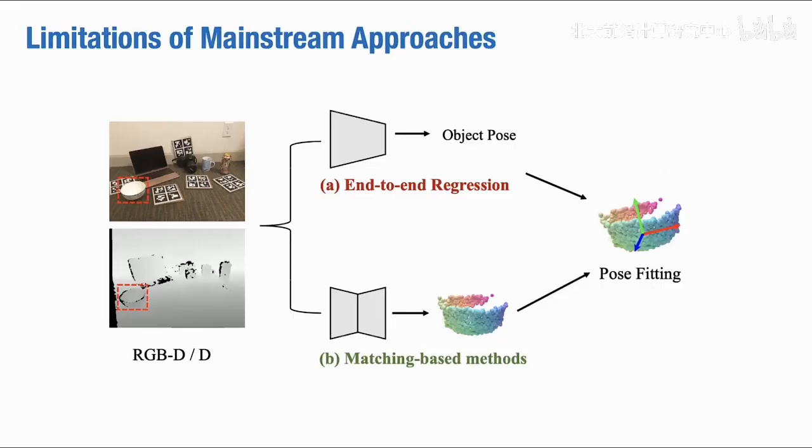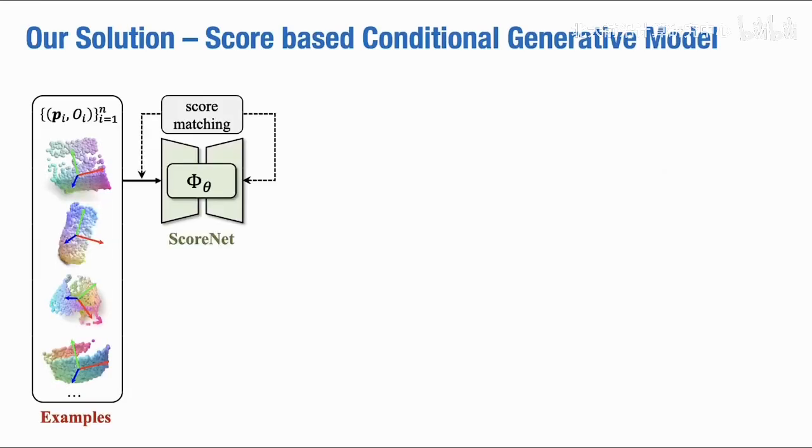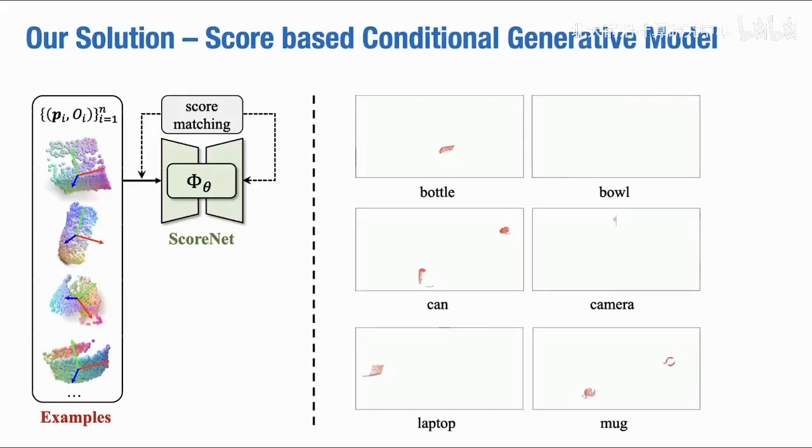while matching-based methods made ad hoc designs and lacked generality. To address this issue, we propose a generative approach that estimates the data distribution of the ground truth examples. Specifically, we train a score network to generate poses via a denoising process.